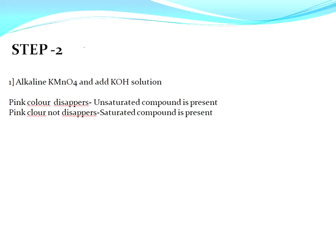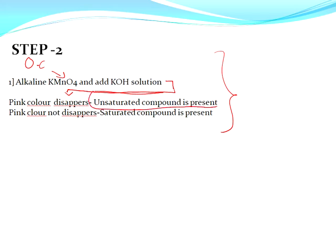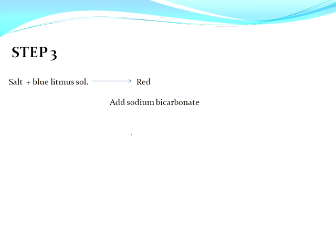After the primary test, we go to the next step: testing for saturated or unsaturated compounds. Take the original organic compound and add KMnO4 solution. You will see pink color appearing, but if it disappears after some time, then an unsaturated compound is present — meaning double bonds or triple bonds are present. If the pink color does not disappear, then a saturated compound with single bonds is present.